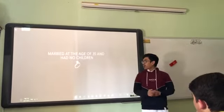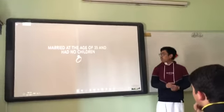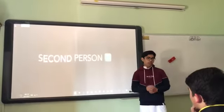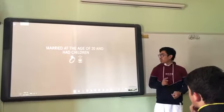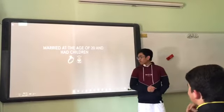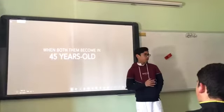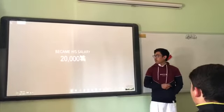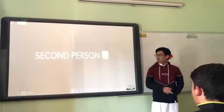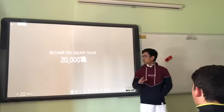First person married at age of 35 and had no children. Second person married at 20 and had a child. When both of them become 45 years old, first person's salary becomes 20,000 and second person's salary becomes near 20,000.